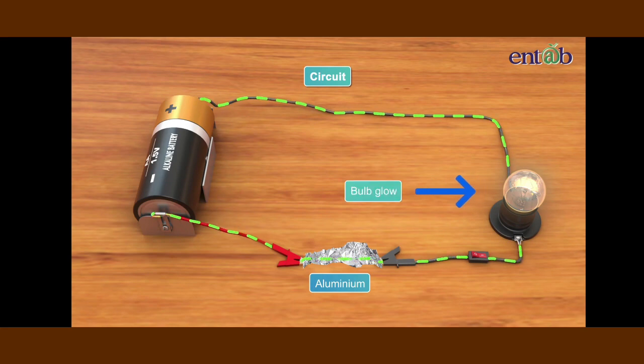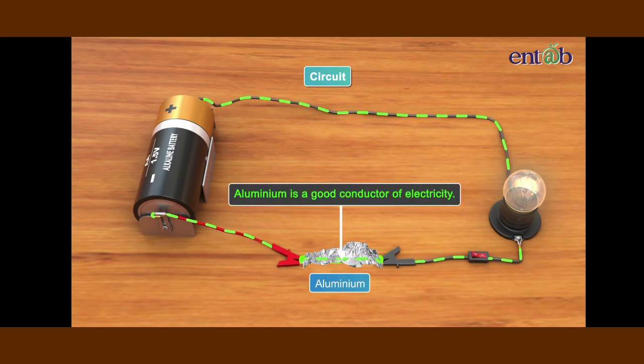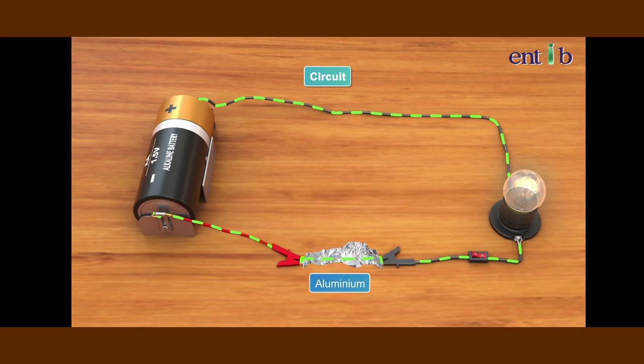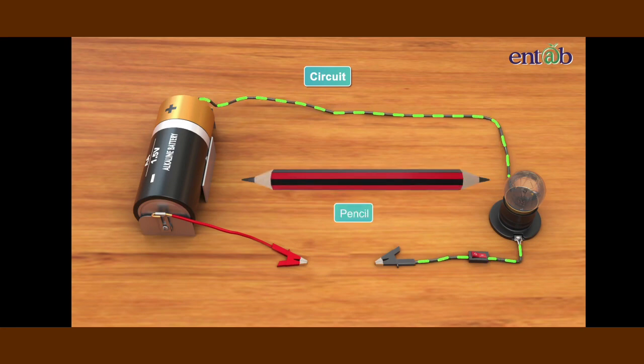Let us now insert a piece of aluminum foil between the two crocodile clips. Turn on the electric switch. What do we observe now? We observe that the bulb glows immediately. It is because aluminum is a good conductor of electricity.